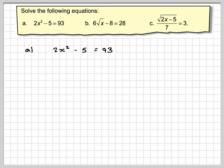Writing down the first one, we've got 2x squared minus 5 equals 93. Solving equations is all about balance and doing opposite operations. We've got 2x squared minus 5.